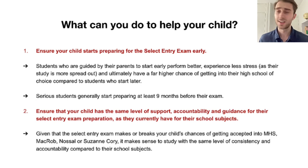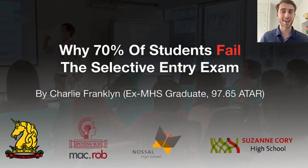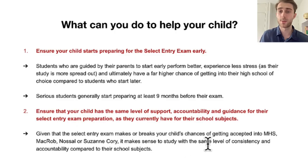Number two is ensuring that your child, as I briefly mentioned before, has the same level of support, accountability, guidance and structure for their select entry exam preparation as they currently have for their school subjects. This really makes sense given that this select entry exam really makes or breaks your child's chance of getting into these schools. If your child wants to get into any of these schools, for 85% of students all they'll look at is just the performance on this exam. They don't look at school subjects, grades, they don't look at reports, they don't look at co-curricular achievements, they're just looking at this exam score. That's why it makes it so important to study for this exam with the same level of consistency and accountability as you would for a school subject.